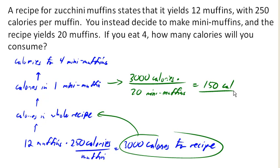So now, finally, I can answer my question. The calories for 4 mini-muffins would be 150 calories per mini-muffin times 4 mini-muffins, gives me 600 calories that I have consumed.